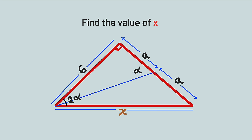I want us to pay attention to the interior angles. For the smaller right angle triangle, observe that we have an angle of alpha, and for the bigger one, we have an angle of 2 alpha, which is twice the smaller one.